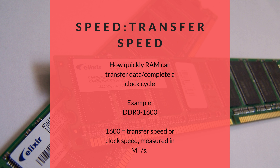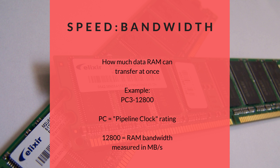So what's the PC label for? This gives the pipeline clock rating for RAM and refers to the bandwidth, measured in megabytes per second — how much data can be sent between the memory and the CPU per second. PC3 refers to the third RAM generation, just like DDR3. The last number in a PC rating refers to bandwidth in megabytes per second, so PC3-12800 RAM has a bandwidth of 12,800 megabytes per second.